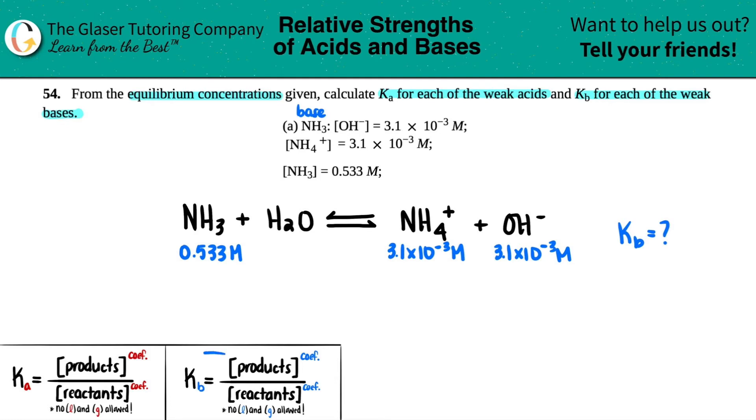We have to solve for Kb because we are a base - B stands for base. Kb, just like any K value, is always concentration of products divided by concentration of reactants. Let me correct this - remember, no liquids or solids allowed in any of my K, Kb, or Ka expressions.